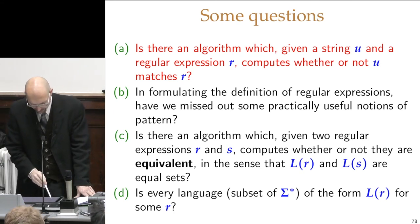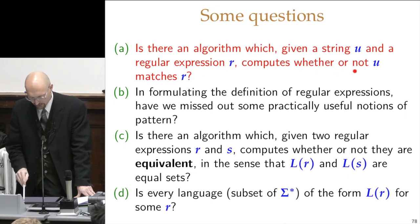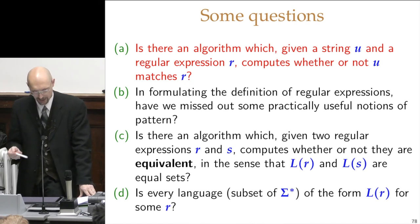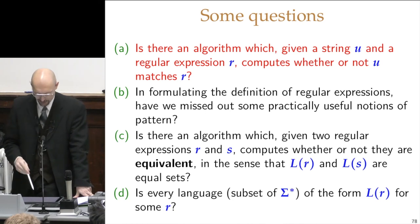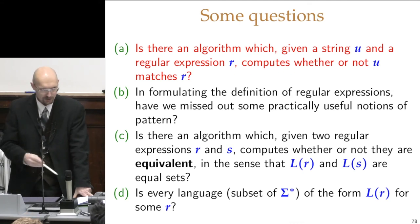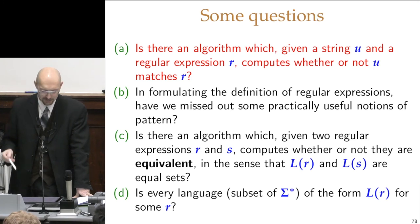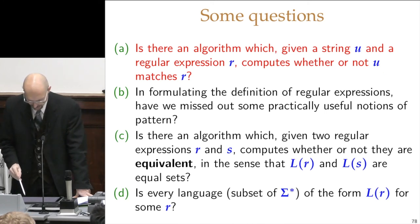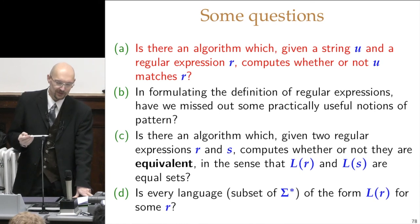is there an algorithm which, given a string U and the regular expression R, computes whether or not U matches R. Now we can answer this in the affirmative by saying, yes, the algorithm is to take the regular expression, build an NFA out of it with the construction we just did, transform the NFA into a DFA using the construction we did the previous time, then feed the DFA the string U, and this will cause a deterministic transition at every symbol of U, and then checking if the final state I get into is an accepting state or not. If it is, then U matches R. If it is not, then U does not match R.